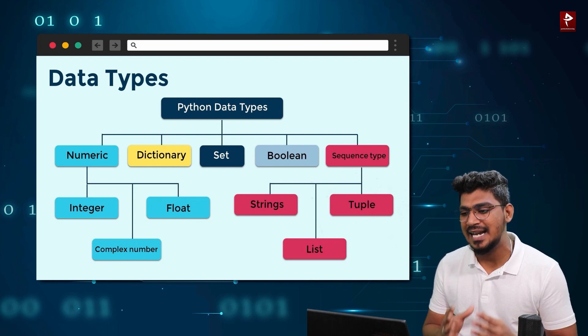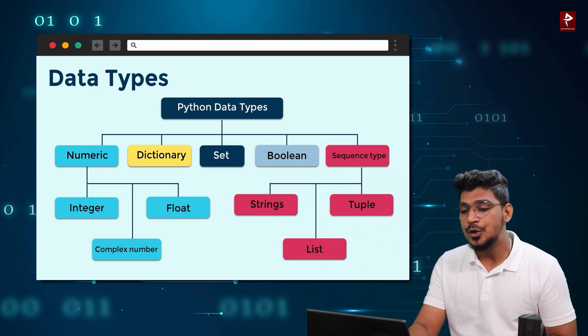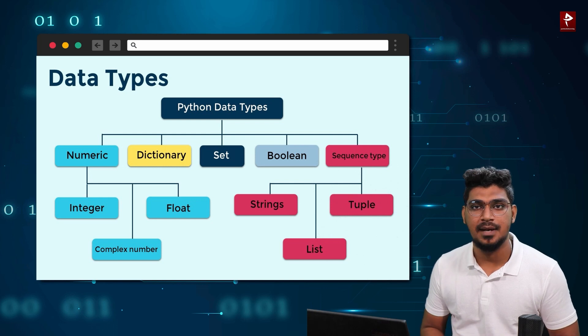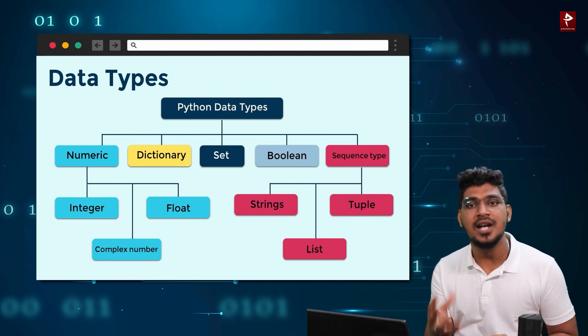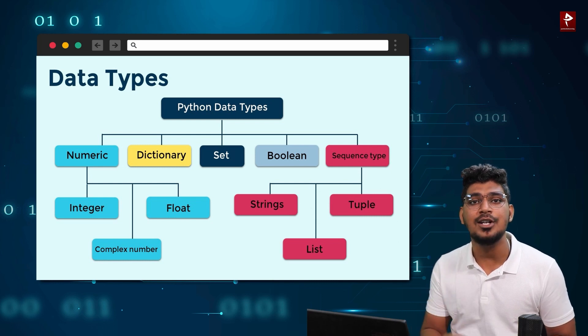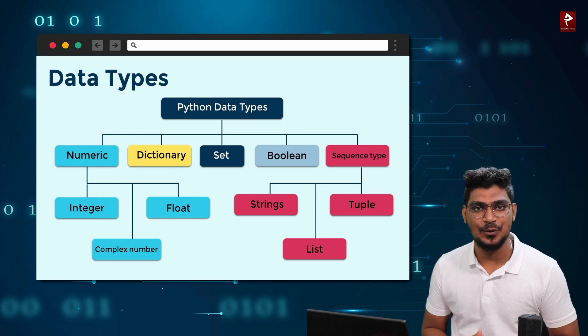String, List and Tuple. So here it is. In this video, there are Python data types. One of the data types is Python numbers. That is called Numeric data type.